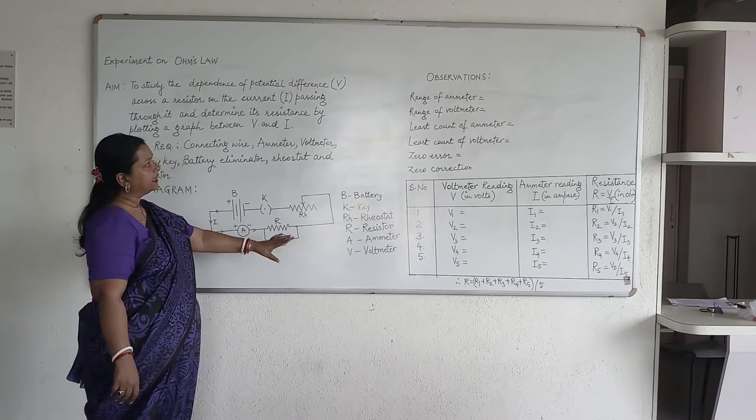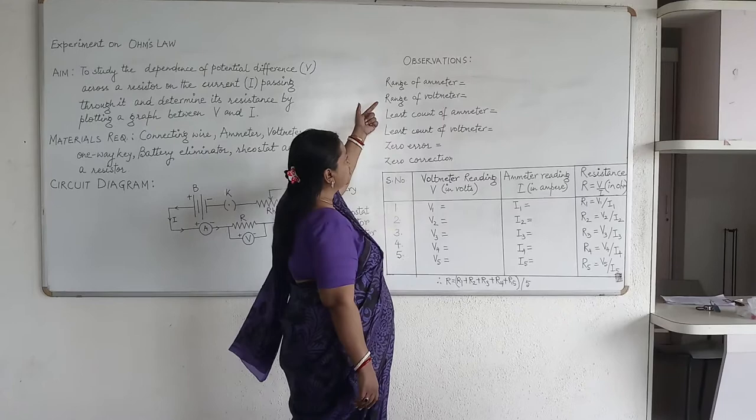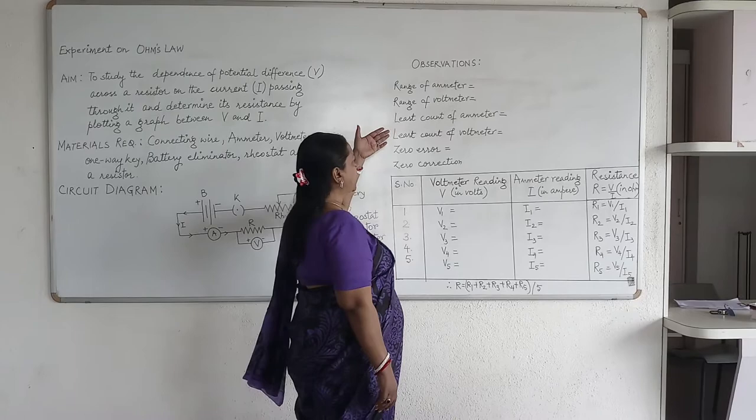This is the observation table. You can see where we find the range of the ammeter and the voltmeter, then the least count of ammeter and voltmeter, and then find the zero error and do the zero corrections.